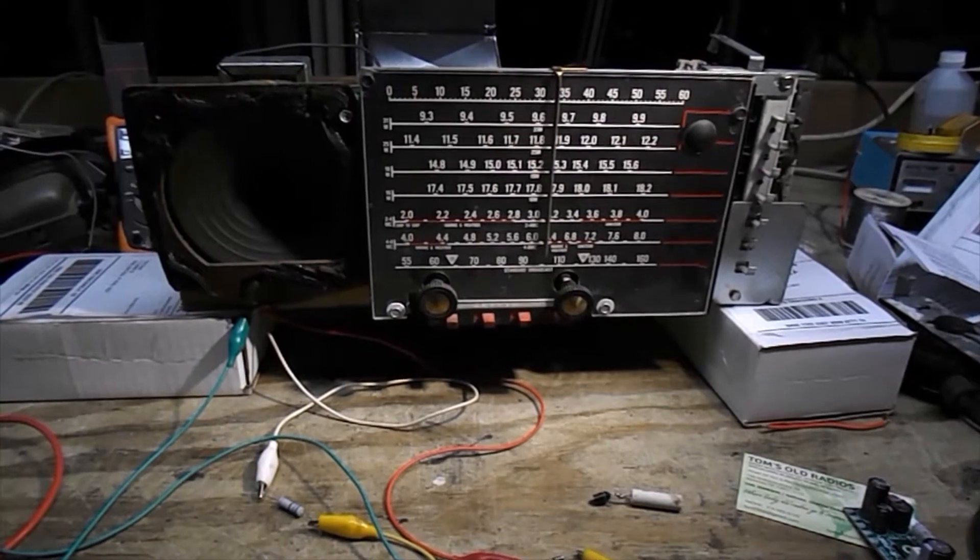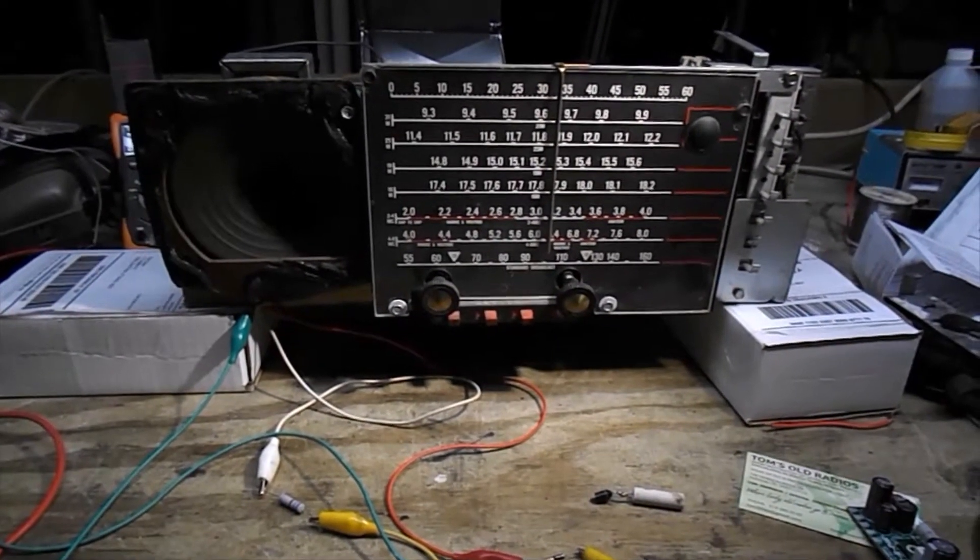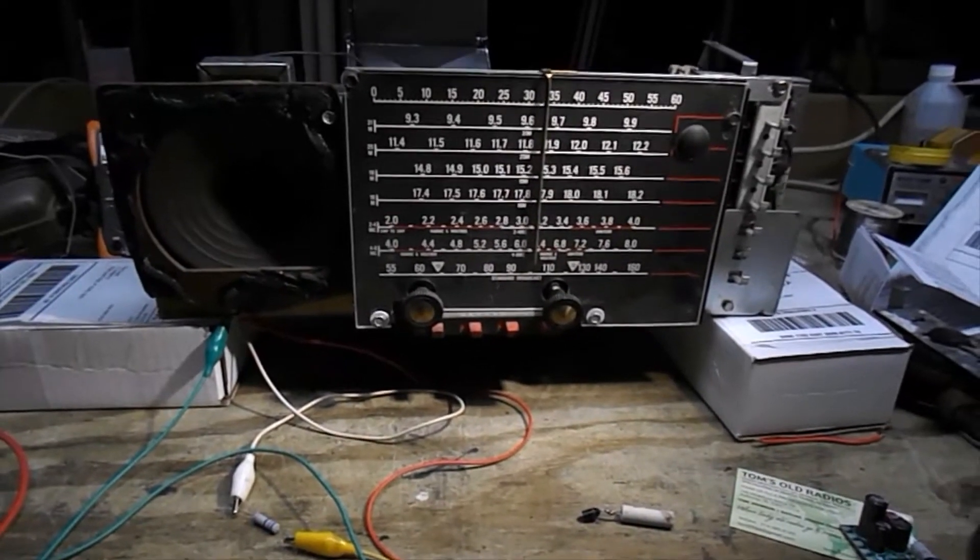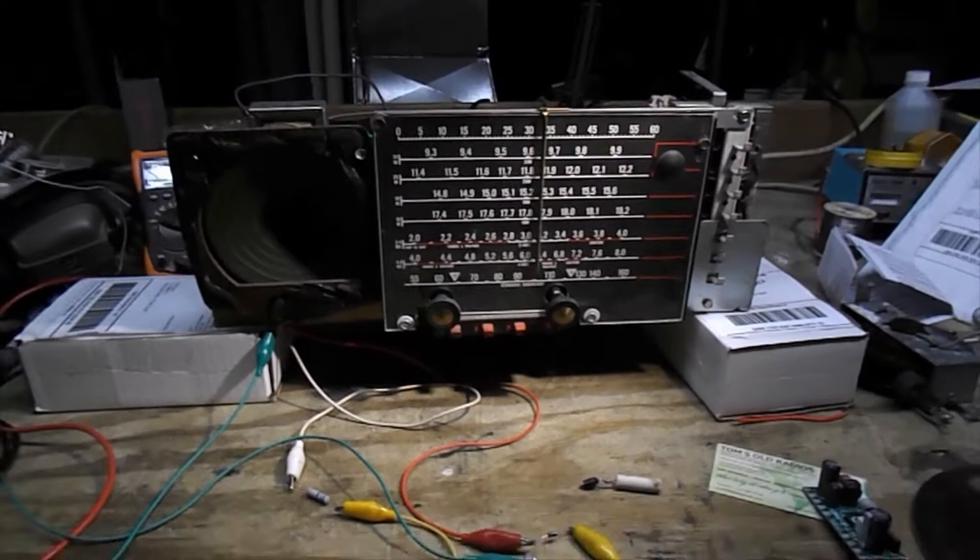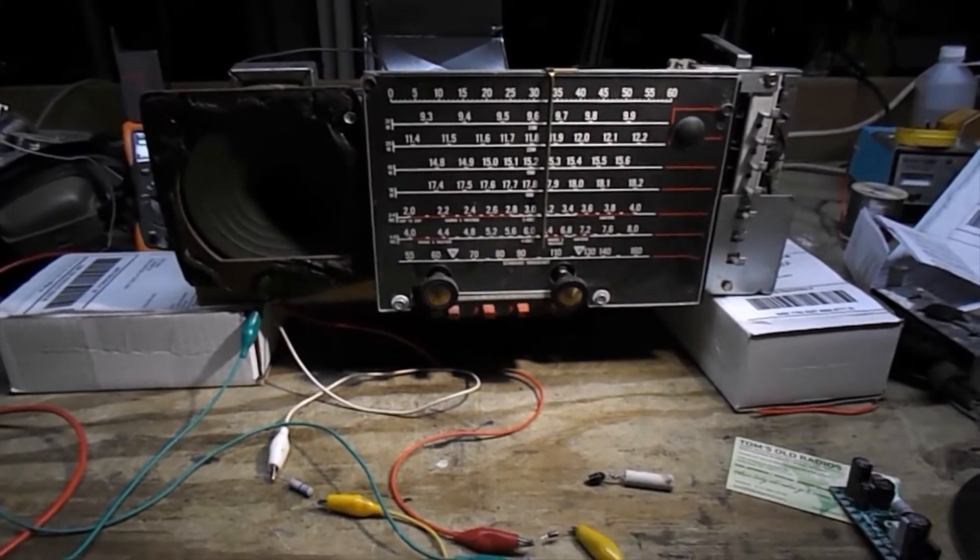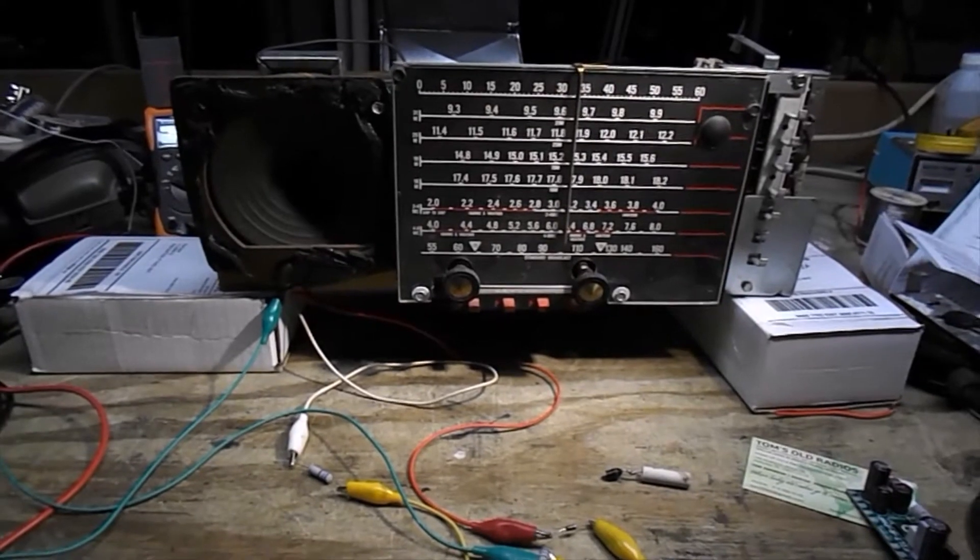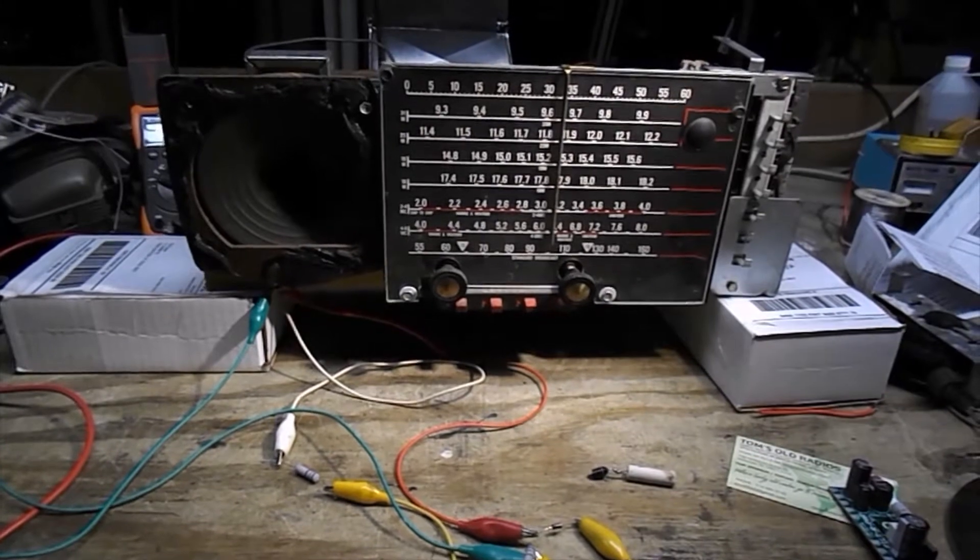This is my Zenith Transoceanic R600 chassis. I picked up the radio at a local thrift store for about $49. When I got it, the cord reel was missing, but the line cord was in the back. So I thought maybe I could just take it home and hook it up with alligator clips and it will work, but it did not work.